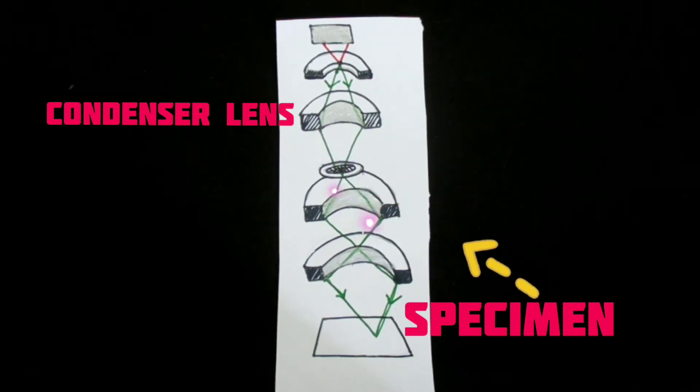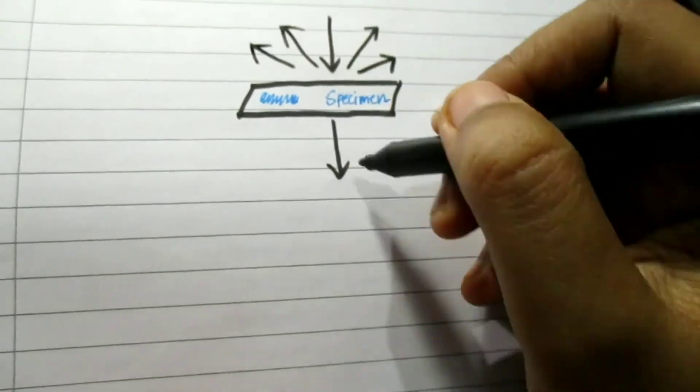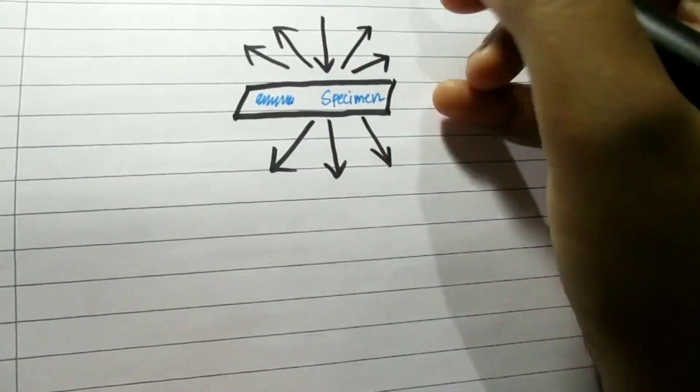To be absorbed, an electron must lose all its energy to the specimen. Image formation in the electron microscope depends on differential scattering of electrons by parts of the specimen.